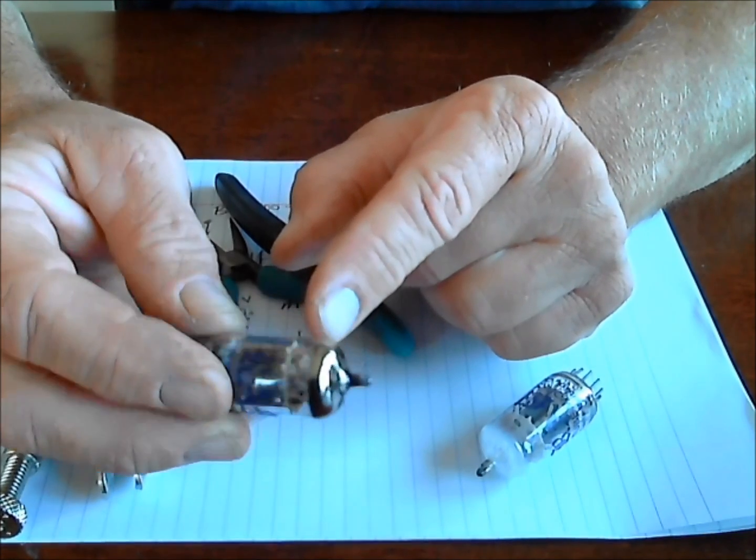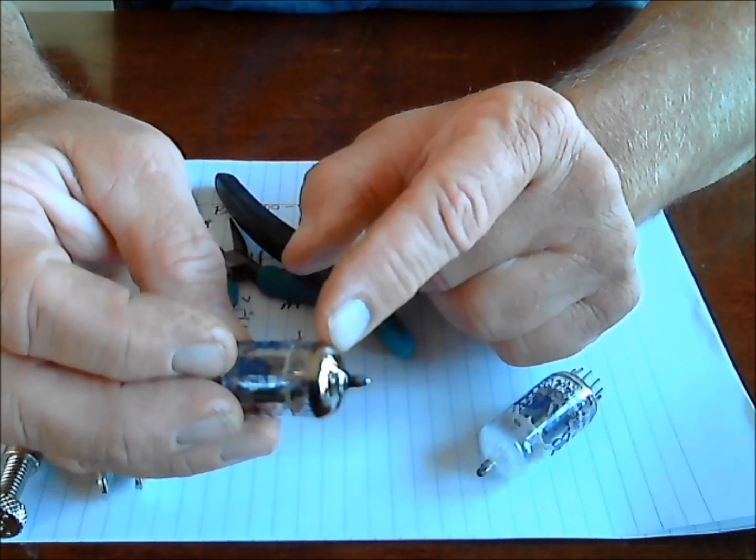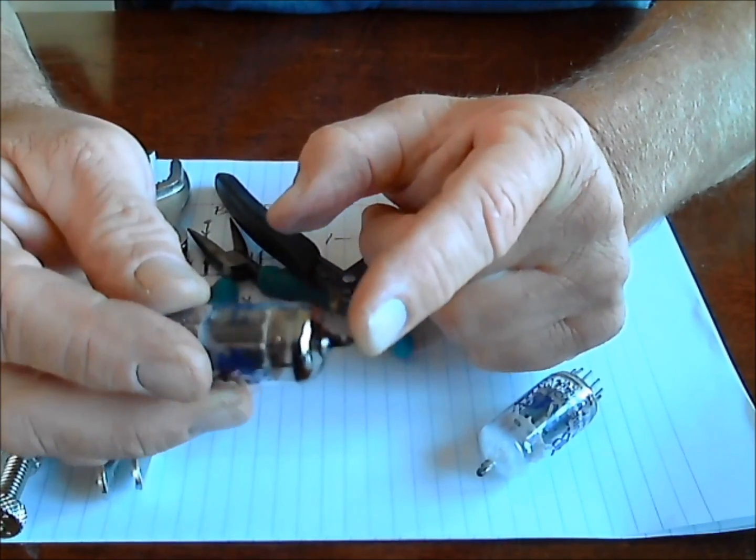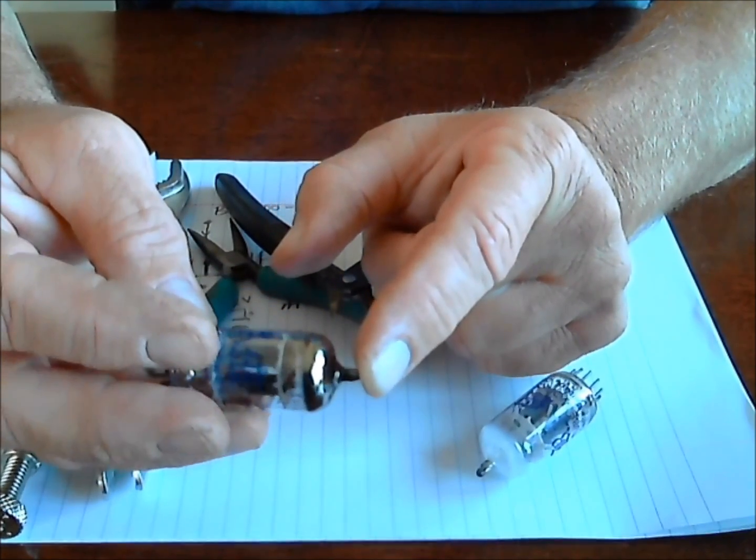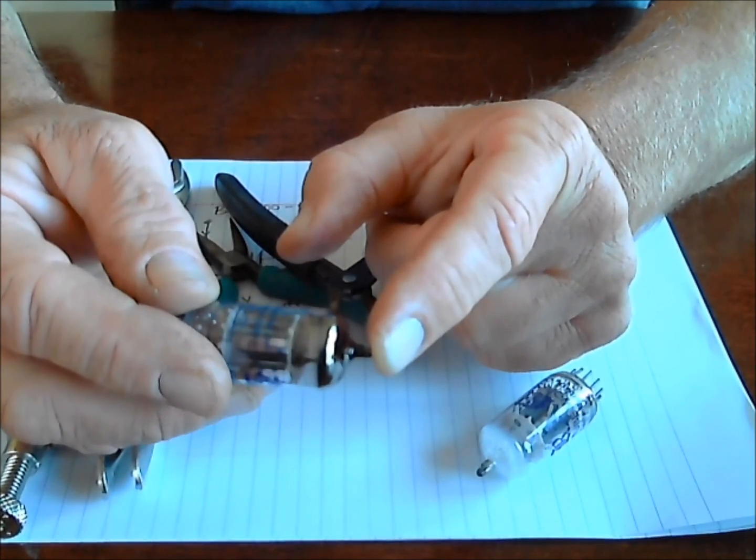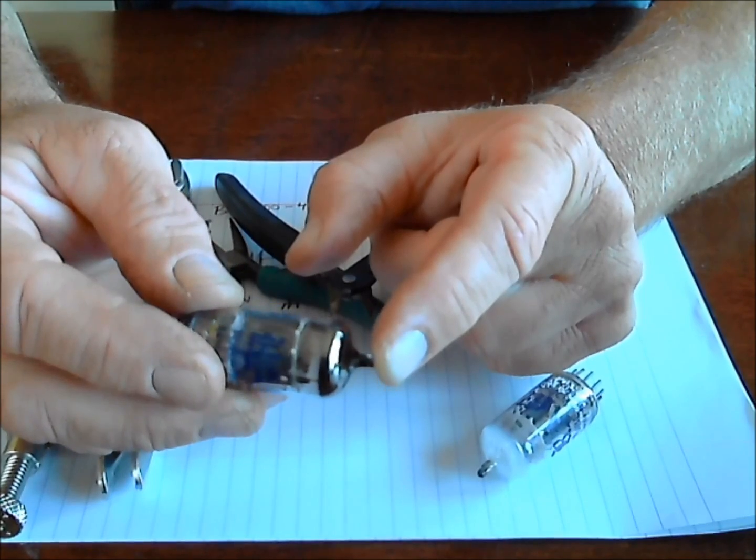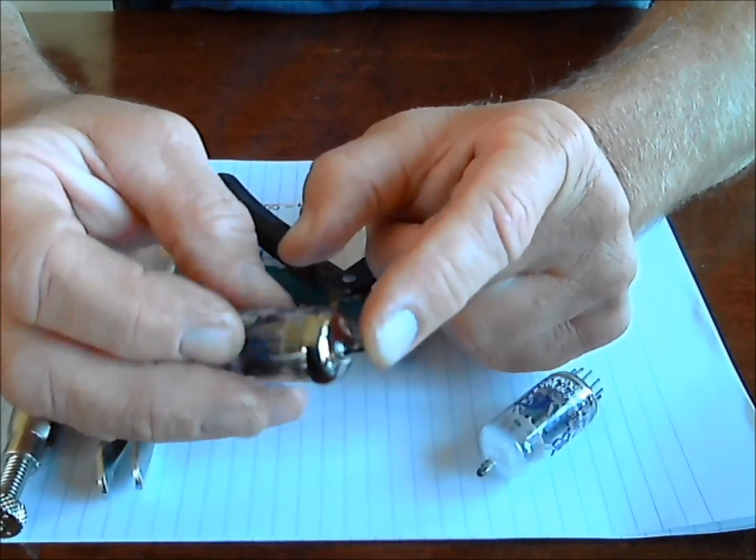On a small tube like this, if the gettering has eroded at all, I wouldn't fool with that tube because in a small signal tube, if the gettering has eroded, it's very much used up and probably gassy at that point, and you don't want that tube. I've seen tubes on eBay that have virtually no gettering, and I can't believe they're on there.